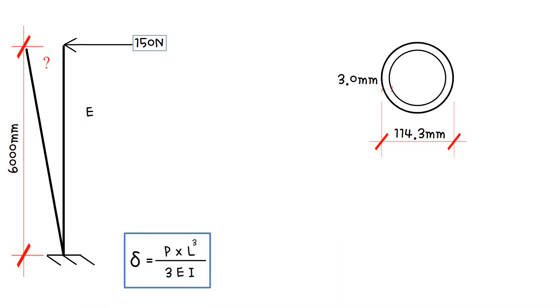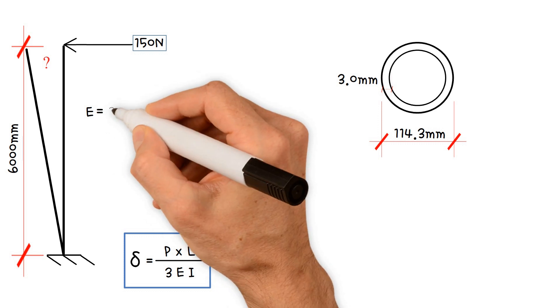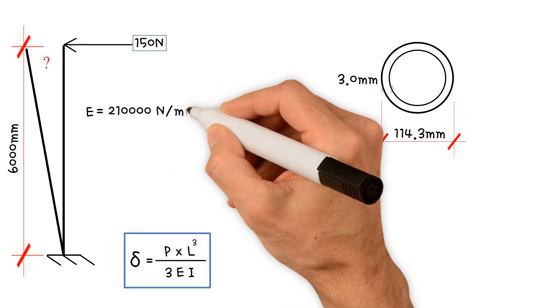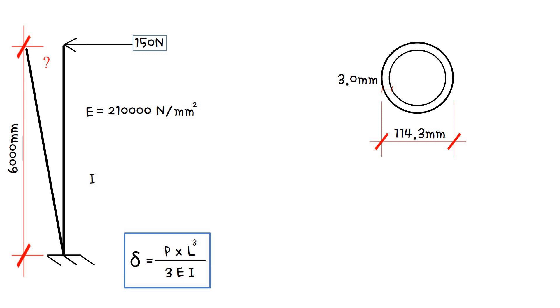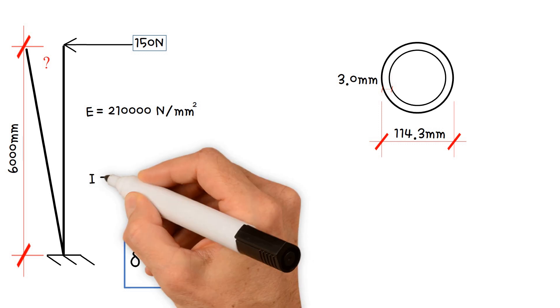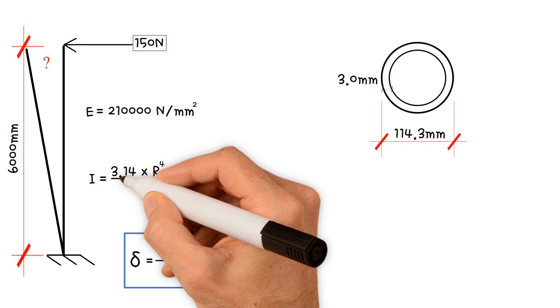E is the Young's modulus, which for steel equals 210,000 newtons per millimeter squared. I is the area moment of inertia, which for a circular section equals pi times the radius to the 4th divided by 4.